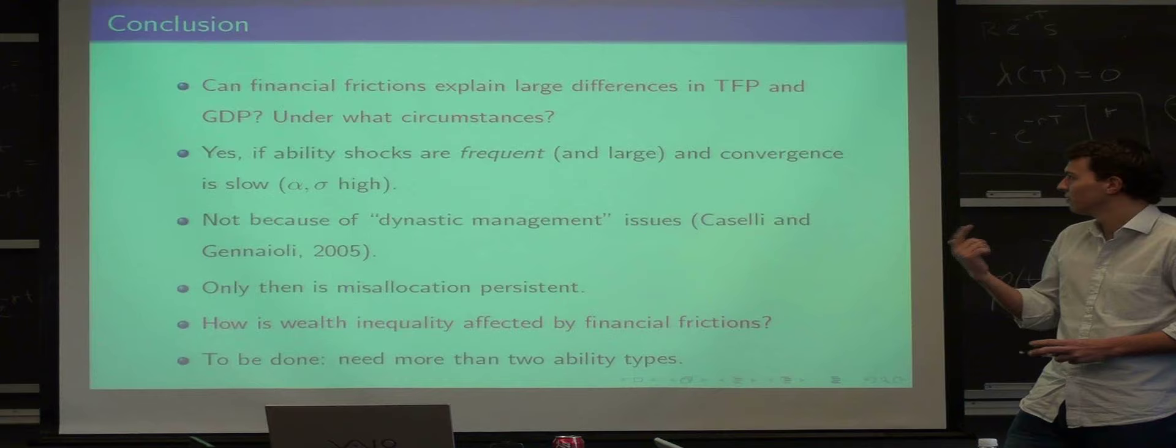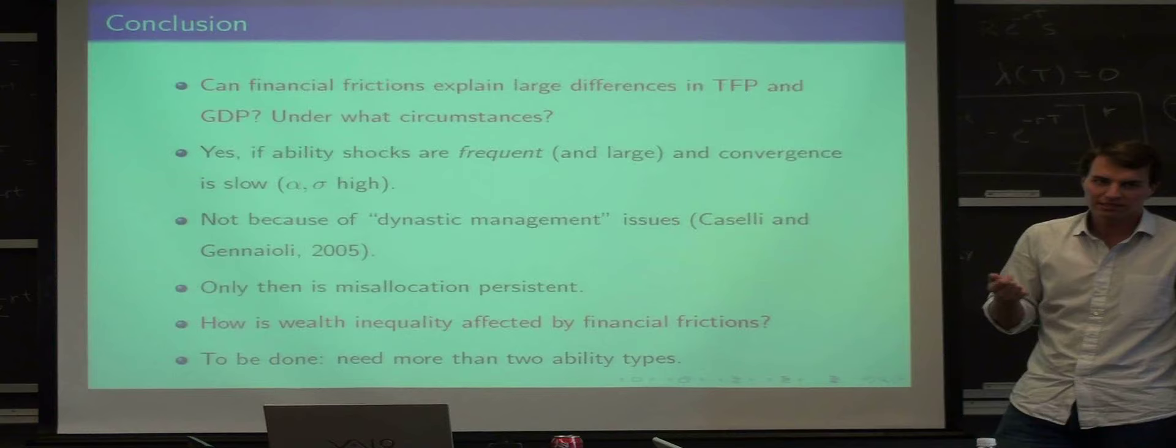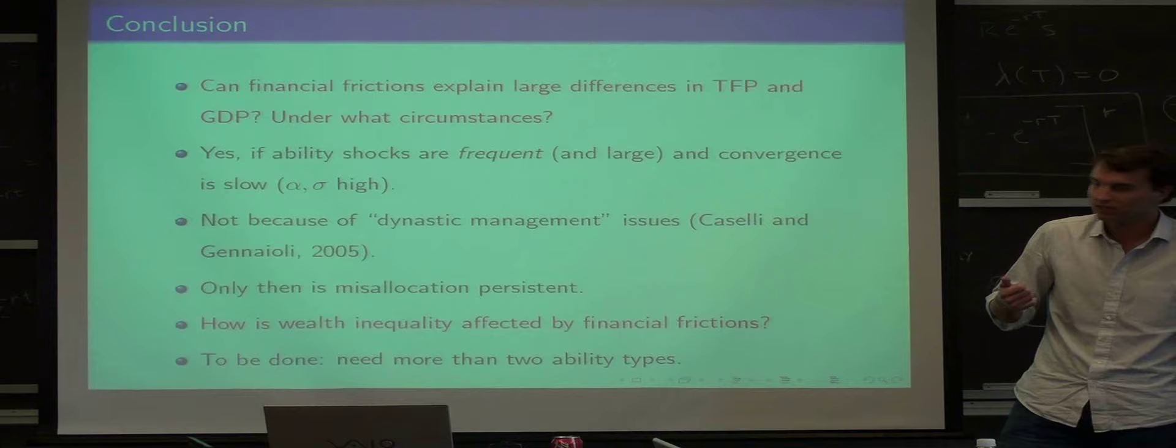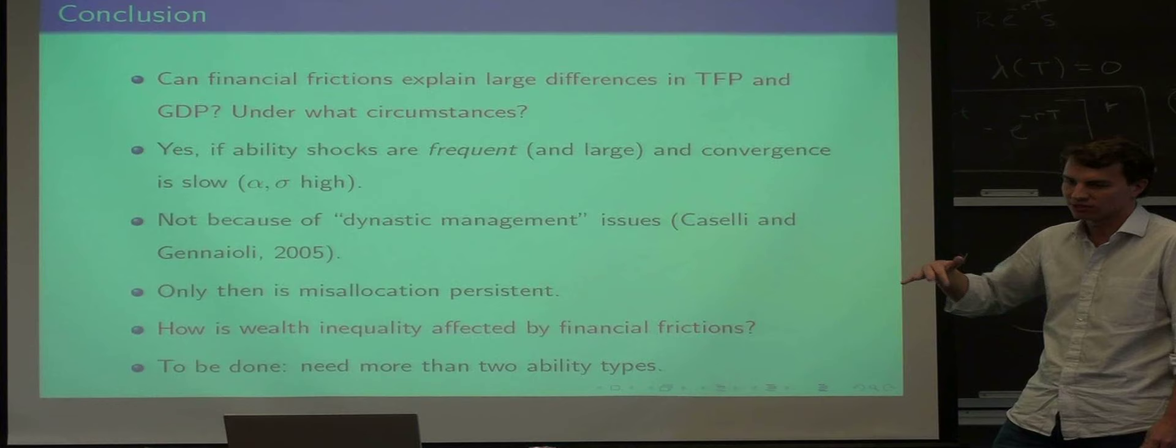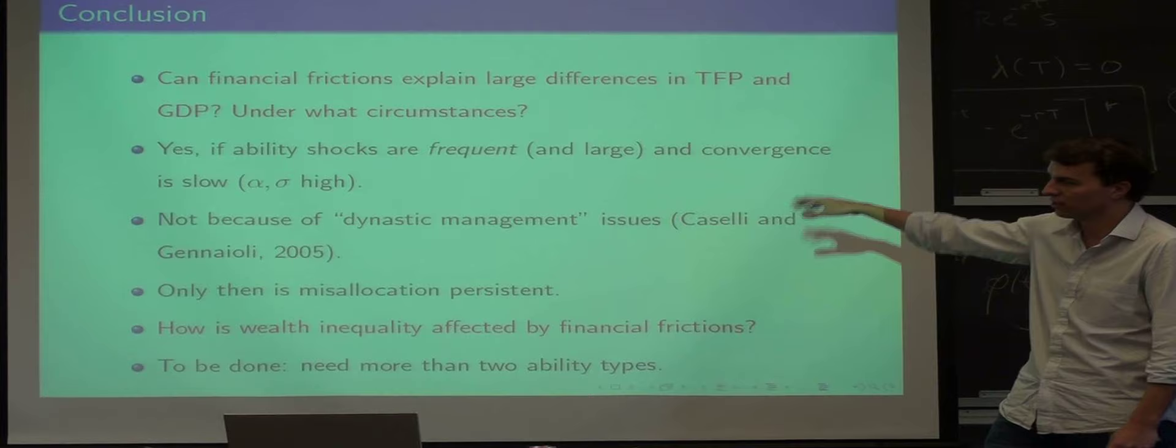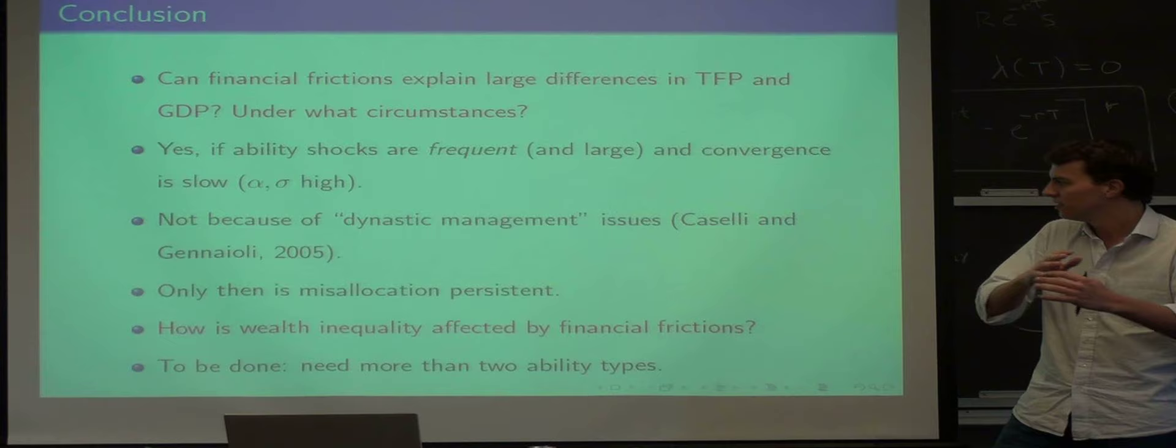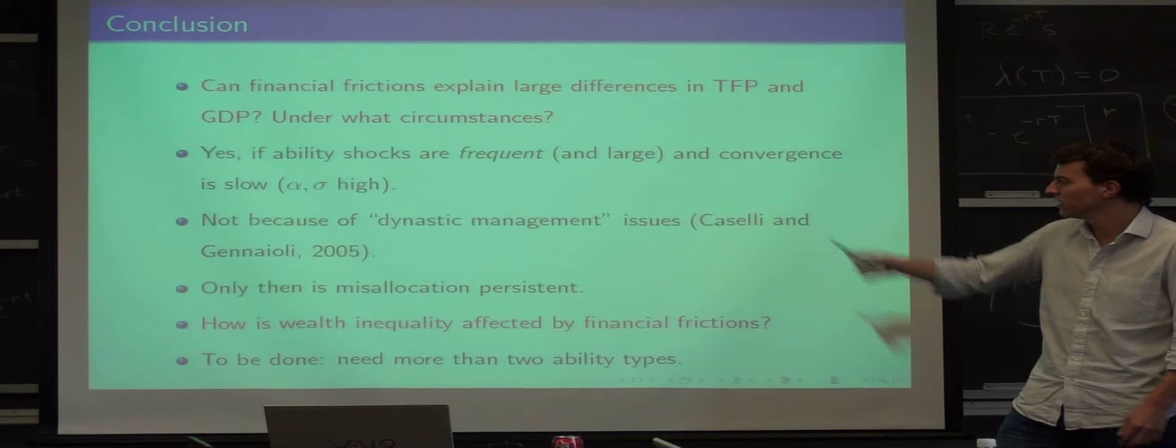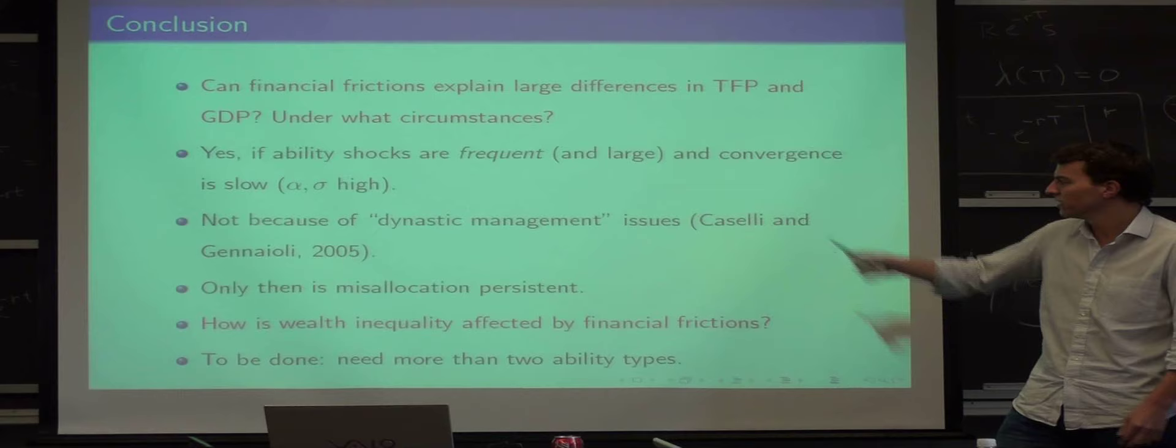In the beginning, I asked, can financial frictions explain large TFP differences and GDP differences? And under what circumstances? In particular, can you explain high capital misallocation on the intensive margin? Yes, if ability shocks are frequent enough. And also that convergence, saving up out of these borrowing constraints, is slow enough. So there are these two counteracting forces. You're being hit by shocks, but at the same time, you kind of save yourself out of the borrowing constraint. What we don't think is an important issue is these dynastic management issues. That's because lifetimes are just too long.